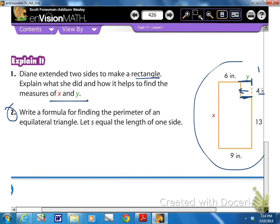Number 2 says, write a formula for the perimeter of an equilateral triangle, and let S equal the length of one side. So remember, equilateral triangles, all sides are congruent or equal length, so if S is the length of one side, then my formula for finding perimeter would be 3 times the sides, because I have 3 of them.